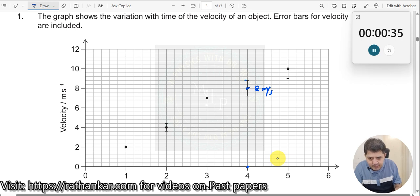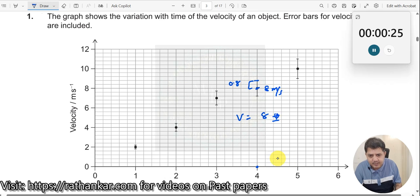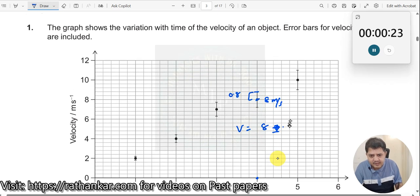And what is this error bar indicating? So, this part of it is nearly 0.4, 0.8. This is 0.8 over here. So, thus I can now write v is equal to 8 plus or minus 0.8. Right. This should be your answer.